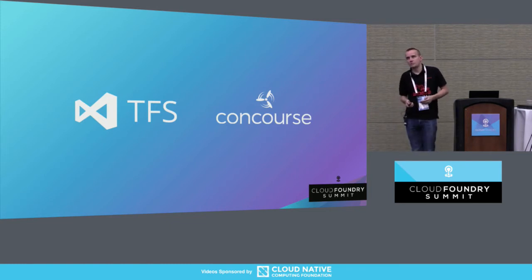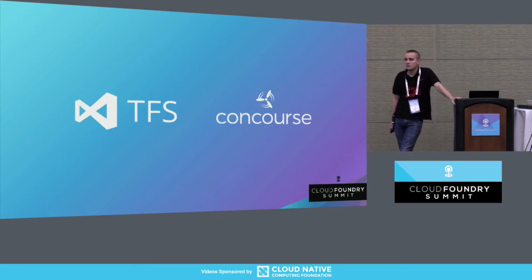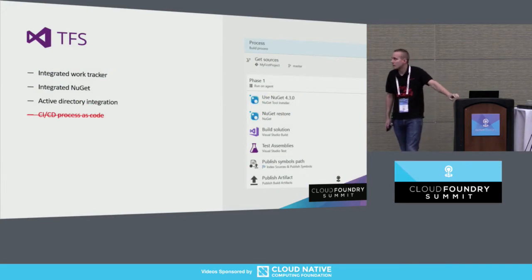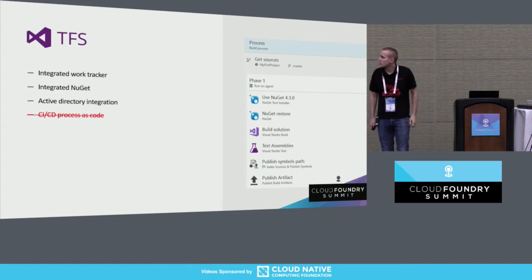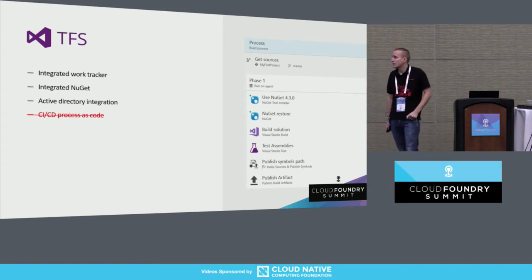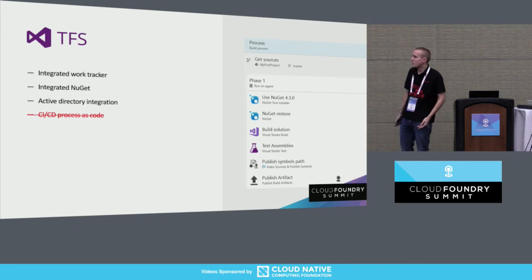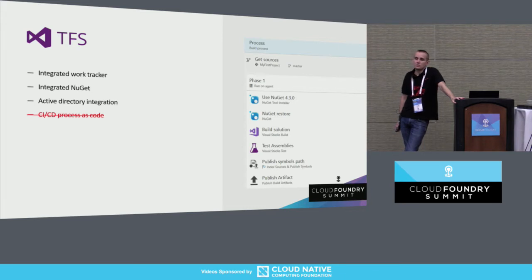To do that, we first needed to choose a CI/CD tool. Based on some internal policies and license constraints, we had only two to choose from: on-premise TFS and Concourse. TFS has a few advantages: integrated work tracker, integrated NuGet, and Active Directory integration — so everything developers already know can be reused. But the biggest disadvantage of on-premise TFS is the lack of a CI/CD process written as code or script that could be stored in Git and reused.